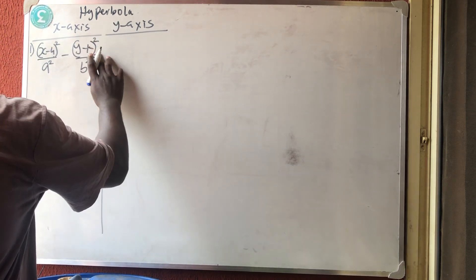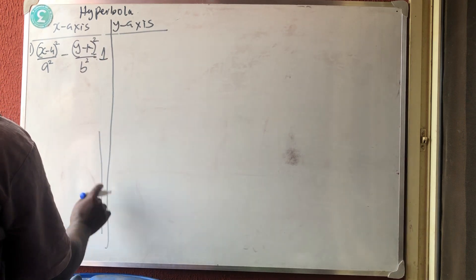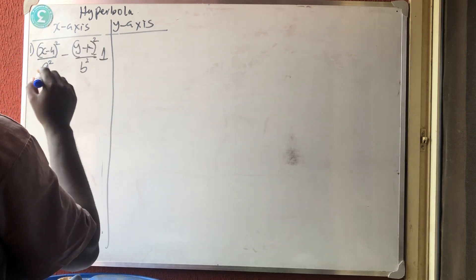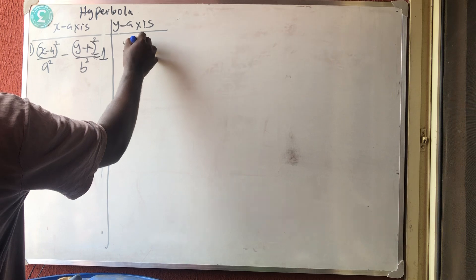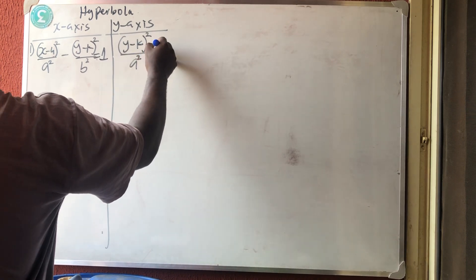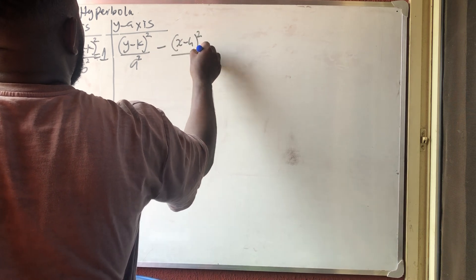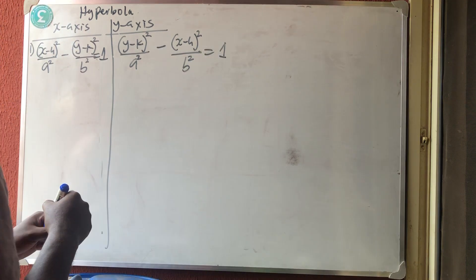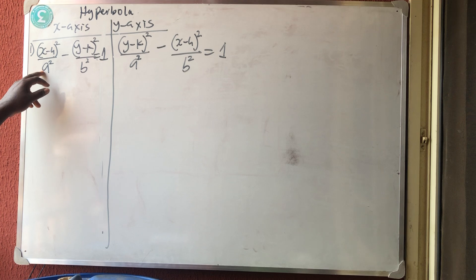For the one that is parallel to the y-axis, I'll have (y - k)² / a² minus (x - h)² / b² = 1.